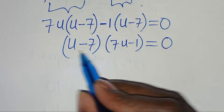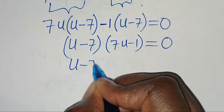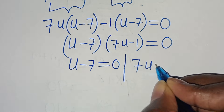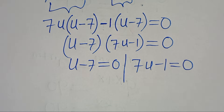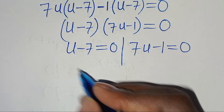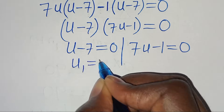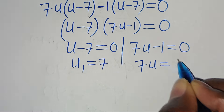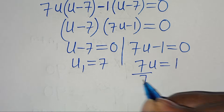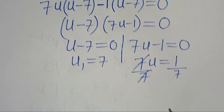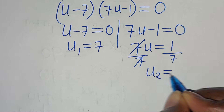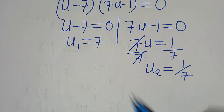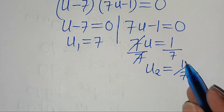We have two equations: u minus 7 equals 0, and 7u minus 1 equals 0. From the first part, u₁ is equal to 7. From the second part, 7u equals 1, so dividing both sides by 7 gives u₂ equal to 1 over 7.